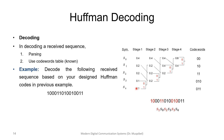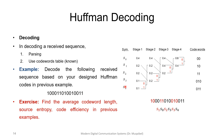Exercise: find the average codeword length and coding efficiency for this code. Also find the variance, and compare how it differs when you place the combined symbol high versus low during a tie. Please share your answers in the comments. In this lecture we covered prefix coding, lossless and instantaneous codes, and focused on Huffman coding. Thank you for being good listeners.